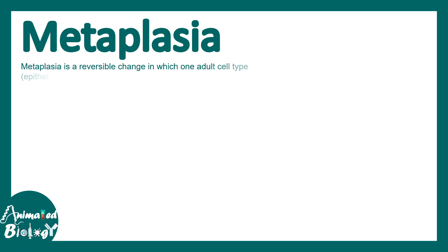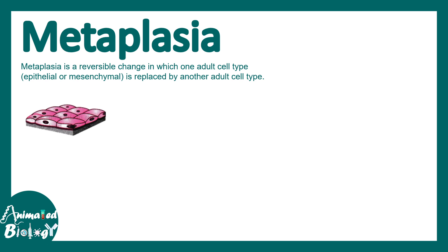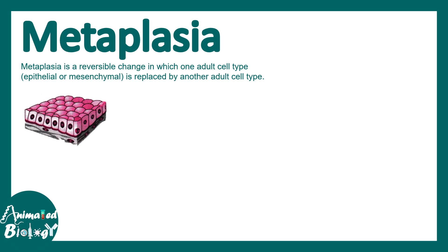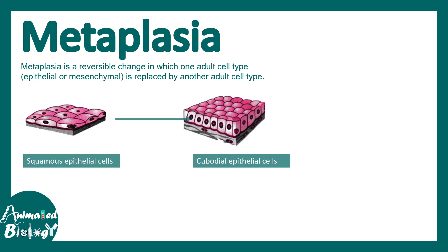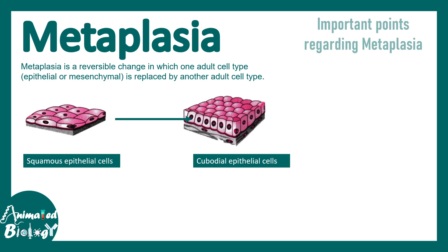Now let's talk about metaplasia. Metaplasia is a reversible change where one adult cell type becomes another adult cell type. For example, a squamous epithelium may become a cuboidal epithelium due to a particular stress or external cue — this transition is known as metaplasia.